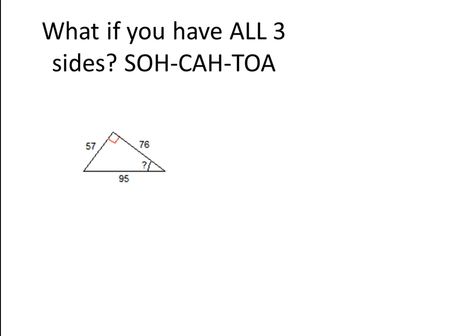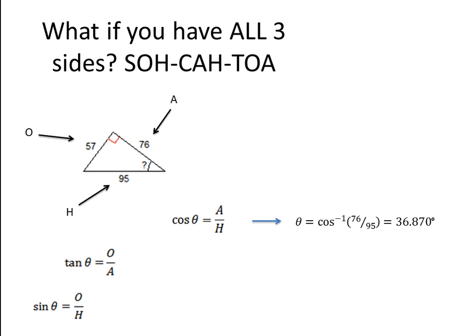What if you have all three sides? It's still SOH-CAH-TOA. I'll identify: opposite is 57, adjacent is 76, and hypotenuse is 95. Since I have all three sides, I could use cosine, tangent, or sine, and I'm going to show that all three give the same answer because we're solving for the same angle on the same triangle. For cosine — adjacent over hypotenuse — the ratio is 76 over 95. Inverse cosine of 76 over 95 gives the angle measurement.